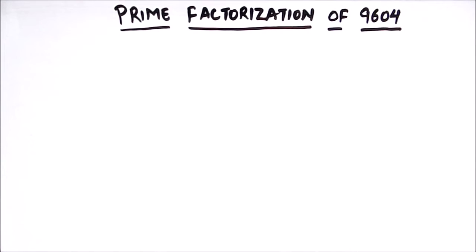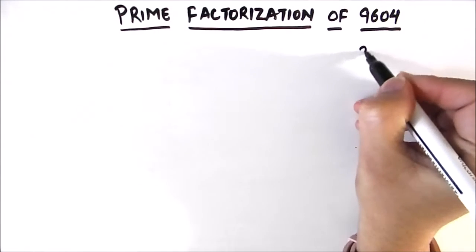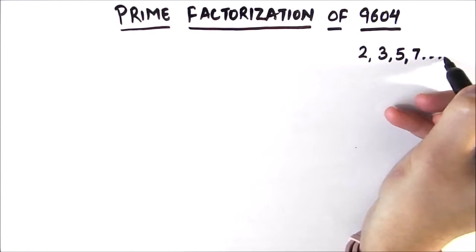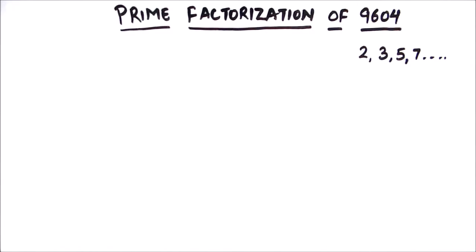Hello students. In this video we are going to learn how to do the prime factorization of 9604. Prime factorization is a method of writing any number as a product of prime numbers. The first few prime numbers are 2, 3, 5, 7, and so on — these are the prime numbers we are going to use.